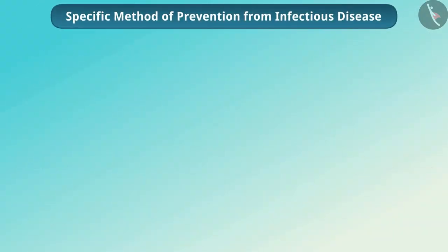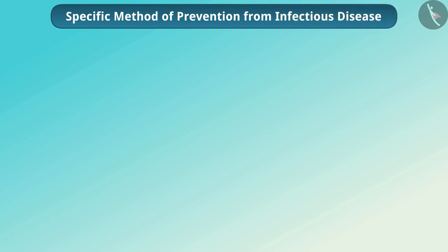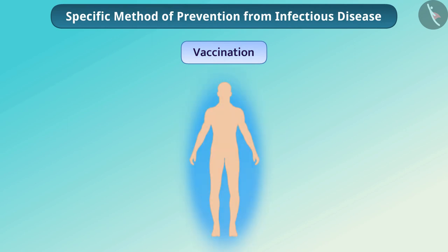Now let's talk about the specific method of prevention of infectious disease. The specific method of preventing infectious disease is vaccination. Vaccination is related to our immune system.